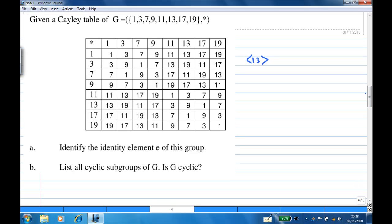Next, let's look at the cyclic subgroup generated by 13. So we start with 13. 13 star 13 is 9, and 13 star 13 star 13, which is 9 times 13, you get 17. And 13 star 13 star 13 star 13, which is 13 power 4, you'll find that 17 times 13 equals 1.